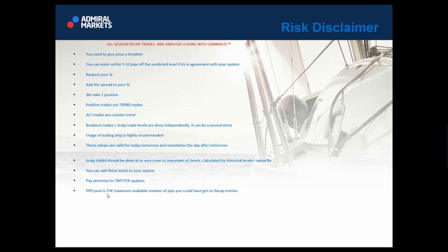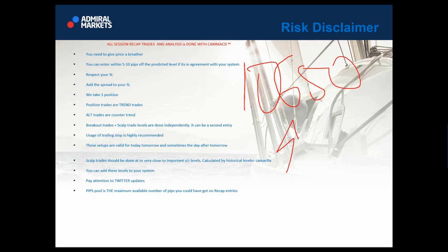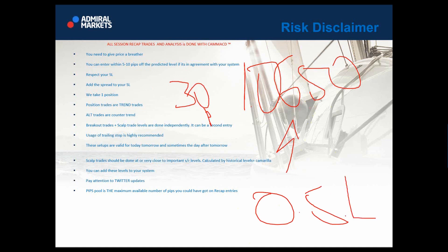The term 'pips pool' is the maximum available number of pips you could have got on recap entries. Many people ask how we have a 10-pip buffer. Let's say you want to sell Euro at 1.0650 and the price came to 1.0640. Let's say your stop loss is 30 pips and your overall risk is 0.5 lots. If you trade with 0.5 lots with a 30-pip stop loss, that should be around 0.8% risk. You always try to go with 0.3% to 0.8% of risk per trade.